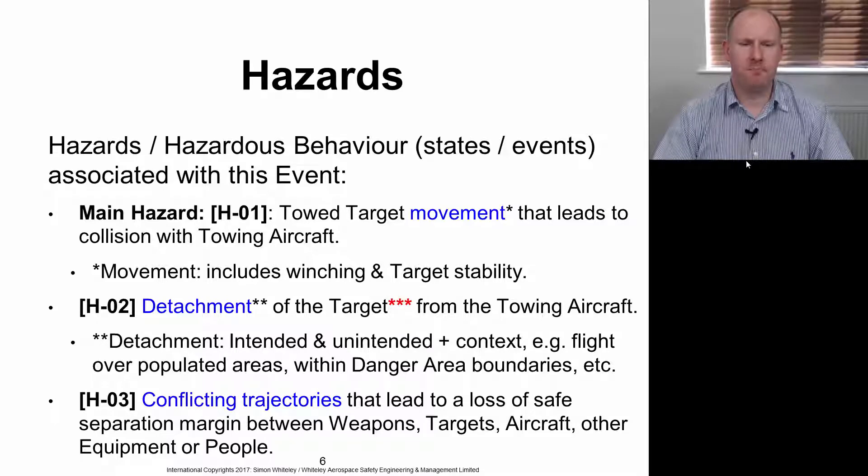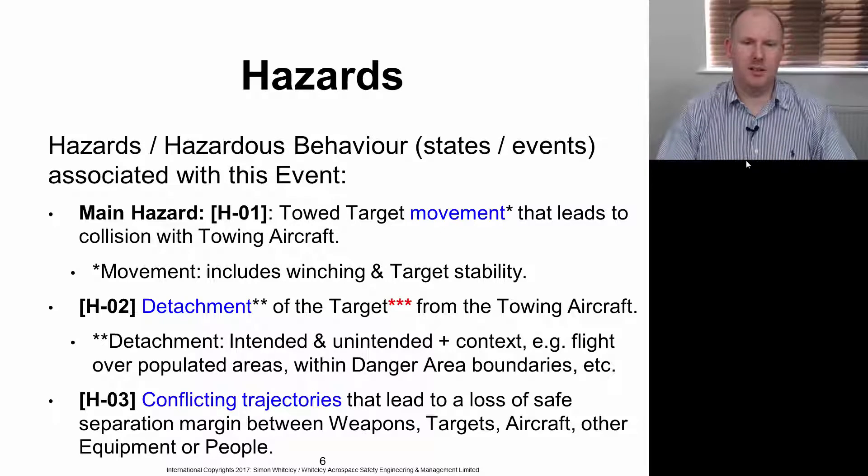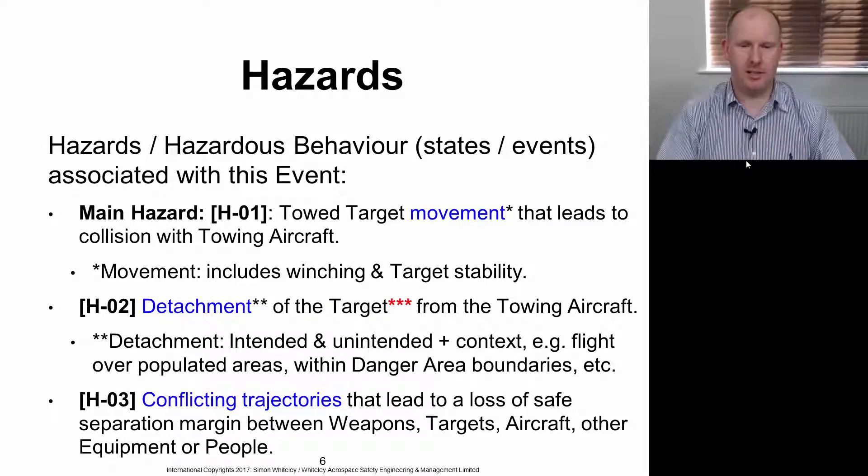And then Hazard 3: conflicting trajectories that lead to a loss of safe separation margin between weapons, targets, aircraft, other equipment, or people. This is a higher-level hazard that involves the operation of the aircraft and the mission involved in towing targets.